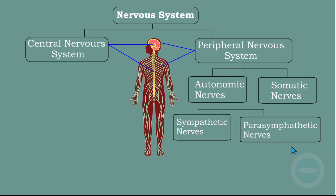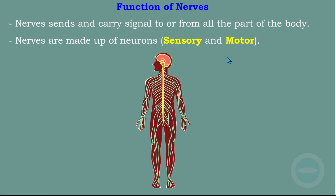So next up, I'll go to the functions of the nerves. If you remember, we have sensory neurons and motor neurons. Nerves send and carry signals to or from all parts of the body — that is the function of the nerves. The nerves are made up of neurons, which are sensory and motor neurons. In the next slide, I will explain sensory and motor neurons.